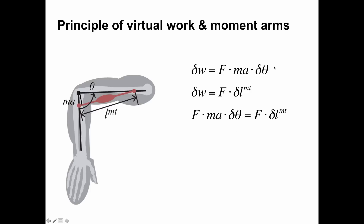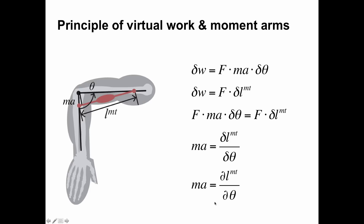Both can define the virtual work a muscle does at a joint, so you can set them equal to each other. If you cross out the F's and rearrange, you get: moment arm equals the virtual length change divided by the virtual angle change. If you take that virtual change to zero, this ends up looking like a derivative. That means the moment arm of the muscle equals the derivative of the change in length of the muscle-tendon unit with respect to joint angle — i.e., MA = dLMT/dθ.